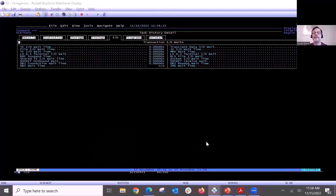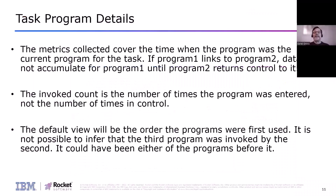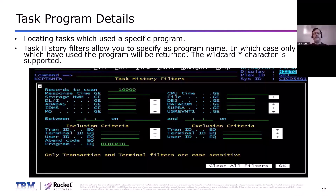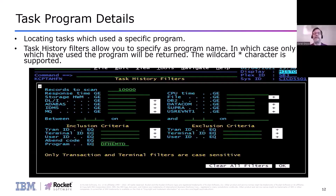Back to the presentation. In terms of task history filters, we showed the ability to search on a particular program through the task history filter, which will pull up all the transactions that went through that program. Note it's case sensitive - only transaction and terminal filters are case sensitive - so you have to be careful. You can search and it'll only pull up the transactions that ran through that particular program. Depending on how much data you keep in task history, you could have a lot to search through.